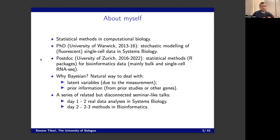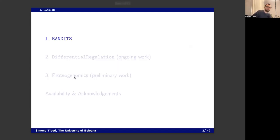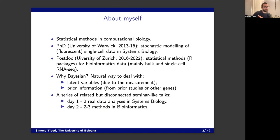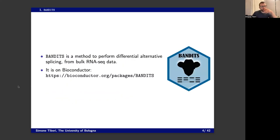Yesterday I said the main two reasons for using a Bayesian approach are latent variables — so missing data — which are due to measurement error and the measurement process of biological data. The same is going to hold today in bioinformatics. In bioinformatics you analyze a lot of genes and you can use information from the other genes as a prior. I don't always go for the Bayesian way, but I mostly do.